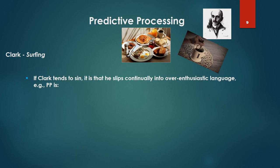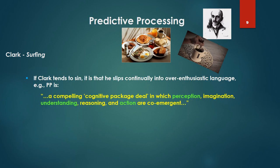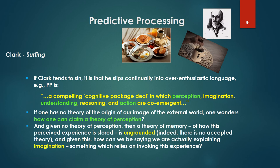If Clarke tends to sin, is that he slips continually into over-enthusiastic language. For example, he'll say PP is a compelling cognitive package deal in which perception, imagination, understanding, reasoning, and action are co-emergent. But if one has no theory of the origin of our image of the external world, one wonders, how can one claim a theory of perception? And given no theory of perception, then a theory of memory, that is, of how this perceived experience is stored is ungrounded, and indeed there is no accepted theory. And given this, how can we be saying that we are actually explaining imagination, which is to say just another form of cognition, something which relies on invoking this experience?